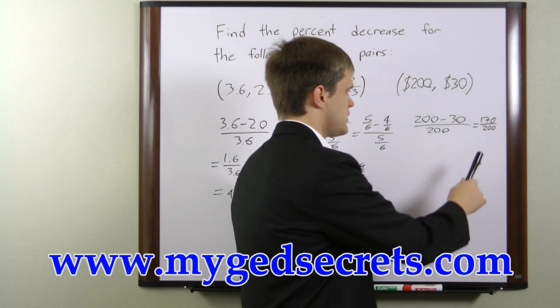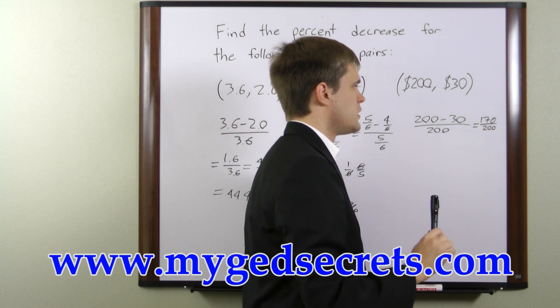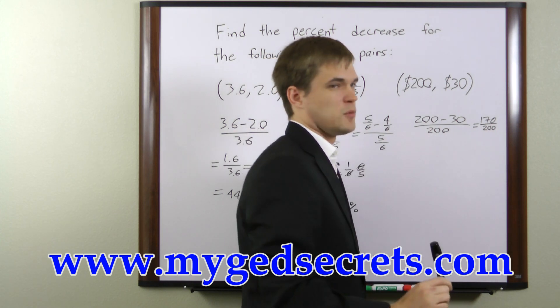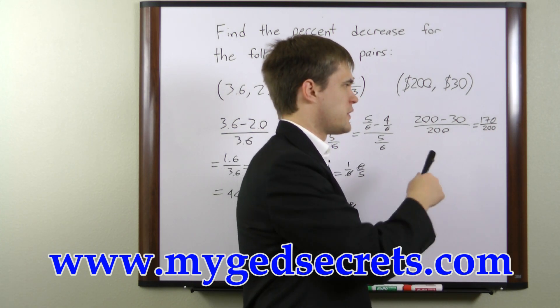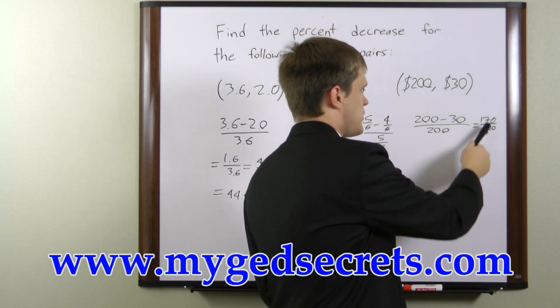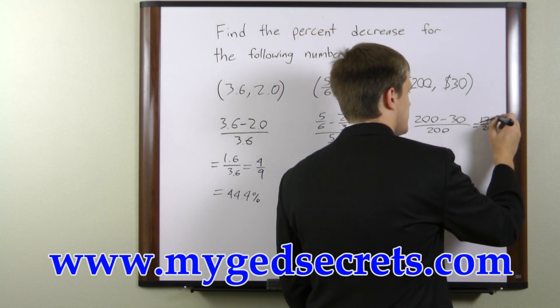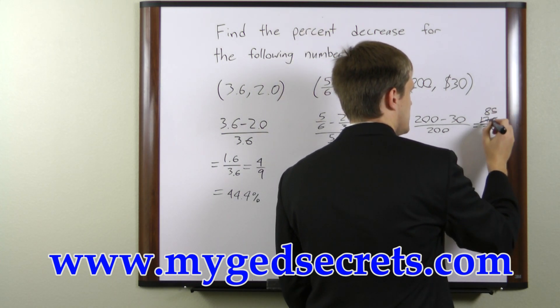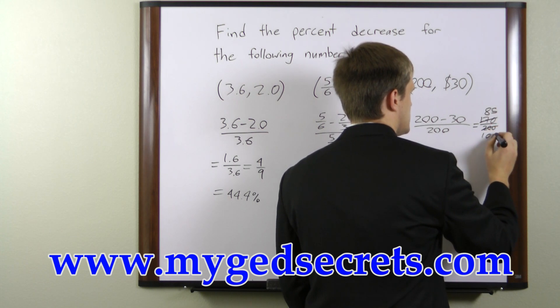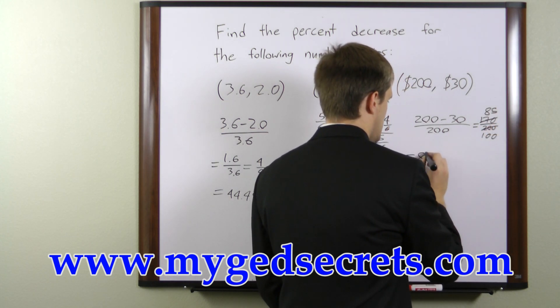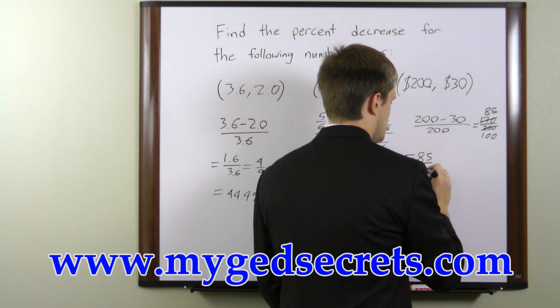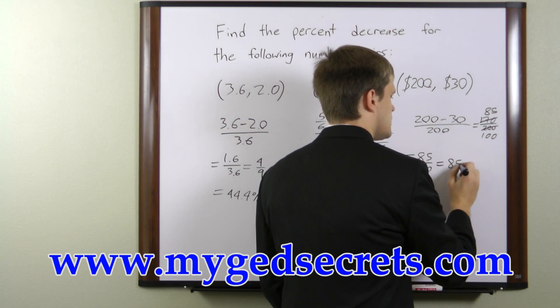Now since our denominator is already so close to $100, we'll just convert it to $100 and then we'll have our percentage figured out already. So we'll divide top and bottom by 2. $170 over 2 is $85, and $200 over 2 is $100. So what we have is $85 over $100, which by definition is 85%.